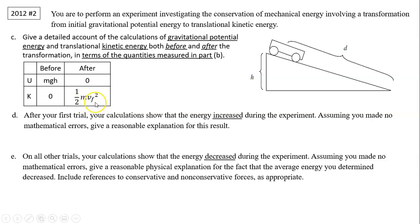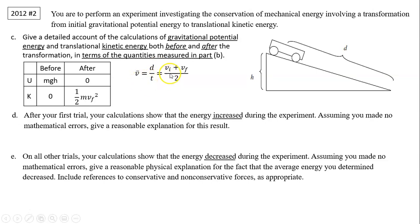Pay attention — we did not measure v_f directly. You must express it in terms of quantities you measured. What we measured is d and t, from which we can find average speed. We also know that average speed equals (v_i + v_f) / 2 for constant acceleration, and since v_i = 0, we can find that v_f = 2d / t.